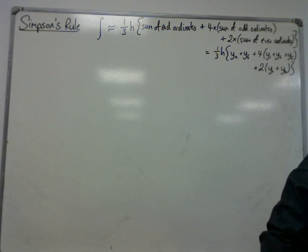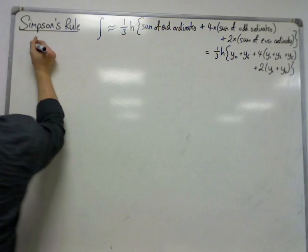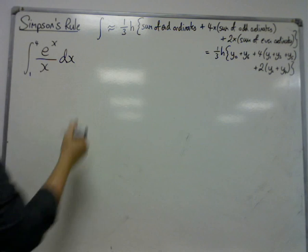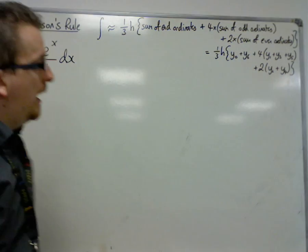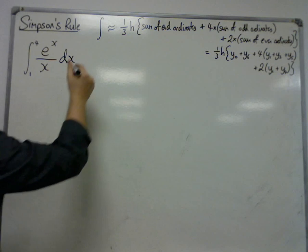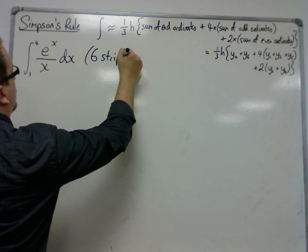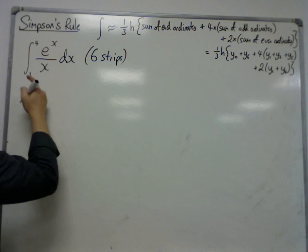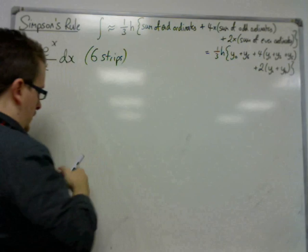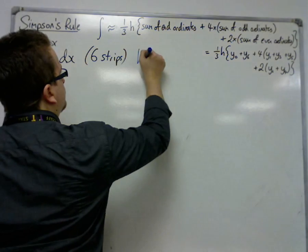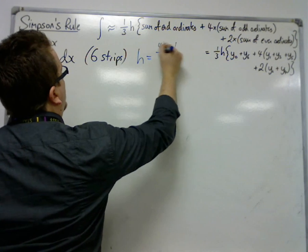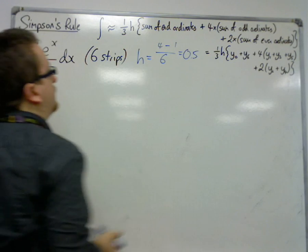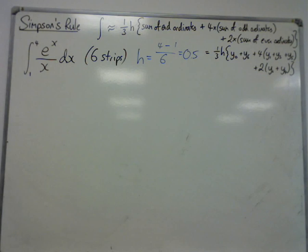An example. This is the example that I'm going to work through. This is going to be done with six strips. So we have to first work out the value of H, so that's the upper value, take away the lower value, divided by the number of strips. So that's three over six, that's 0.5. So H is 0.5.